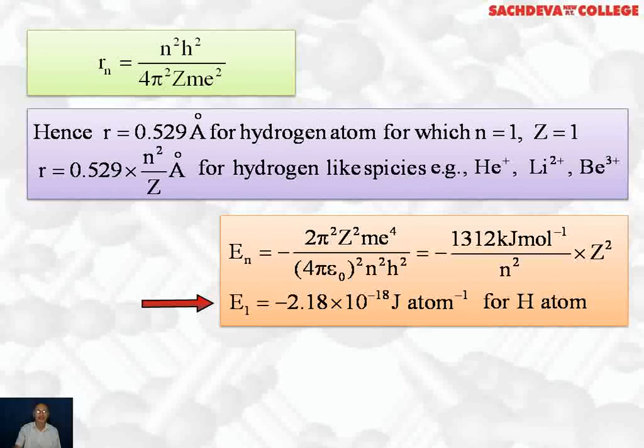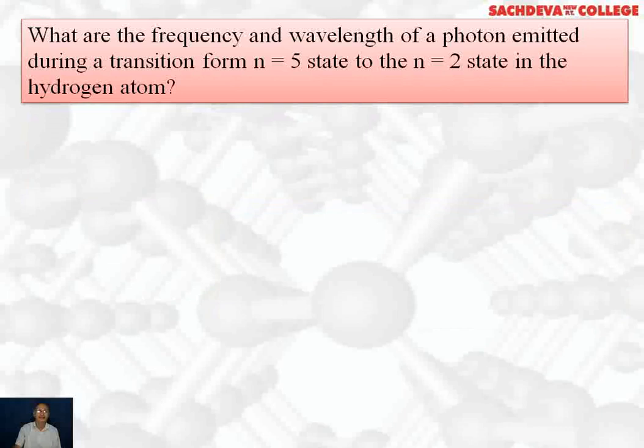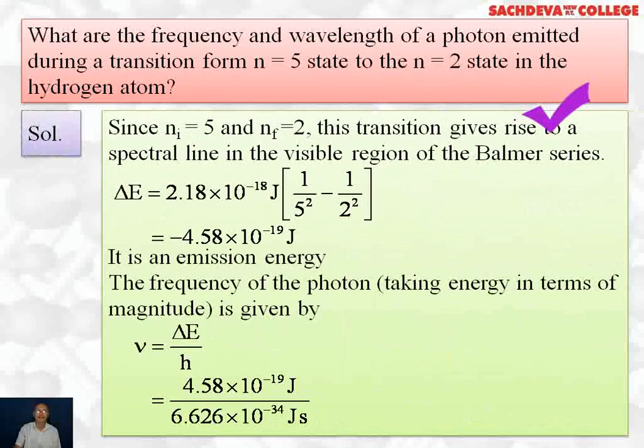Next question is based on Bohr model of atom. What are the frequencies and wavelengths of a photon emitted during a transition from n=5 state to n=2 state in hydrogen atom? So since n initial is 5 and n final is 2, this transition gives rise to a spectral line in the visible region of the Balmer series. ΔE will equal 2.18×10⁻¹⁸ × (1/5² - 1/2²).